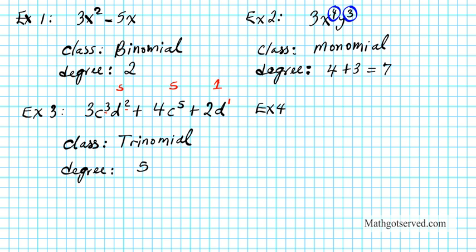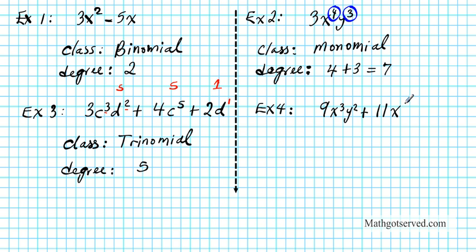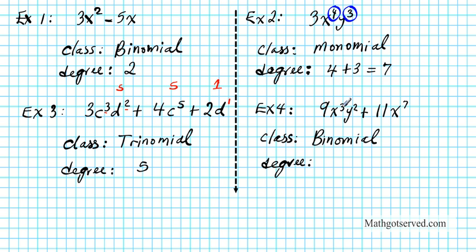Example 4: what if we have the polynomial 9x to the 3rd y squared plus 11x to the 7th? Is this a monomial, binomial, or trinomial? We have two terms here, so this is simply a binomial expression. Now what is the degree? The term with the biggest degree will tell us what the degree of the whole binomial expression will be. So if you look at this one: 3 plus 2, the degree of this term is 5. And then the degree of this term is simply 7. Since this is a bigger degree, this is going to be the degree of the entire binomial expression. So the degree here is 7.